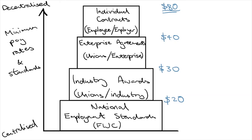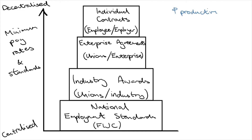Businesses often favor more decentralized contracts because the worker's pay is more tied to their productivity. The first argument for decentralization is that it can incentivize productivity and efficiency — if there's no safety net, then the only way to get a pay rise is to increase skills, work harder, and reallocate to more efficient industries. This leads to technical, allocative and dynamic efficiency in an economy.